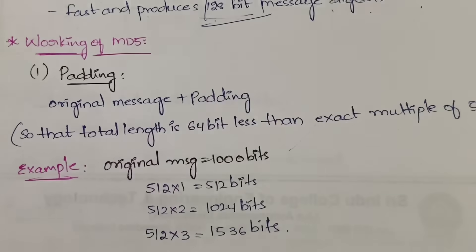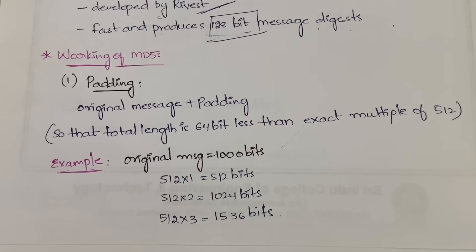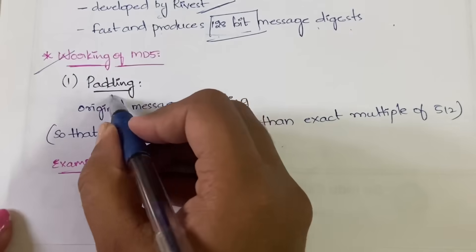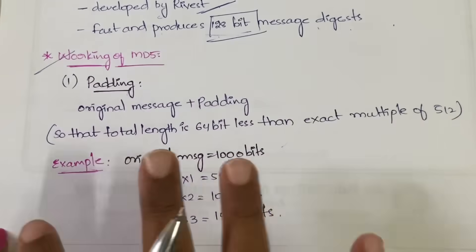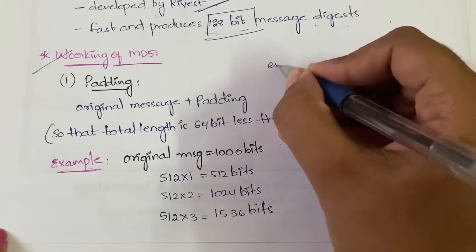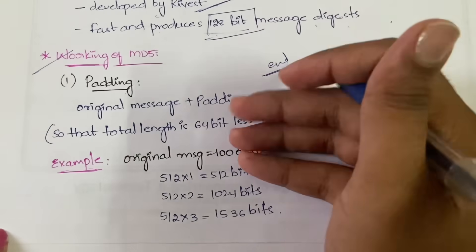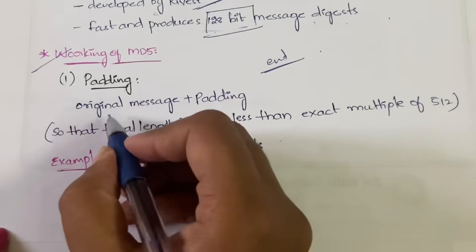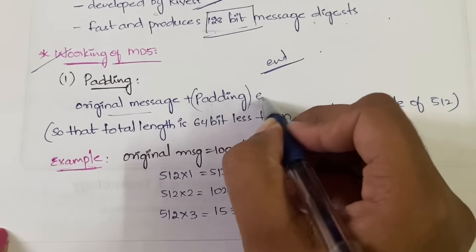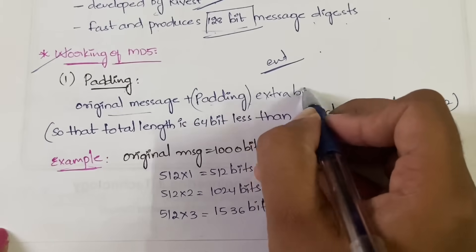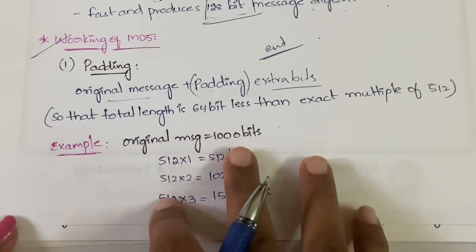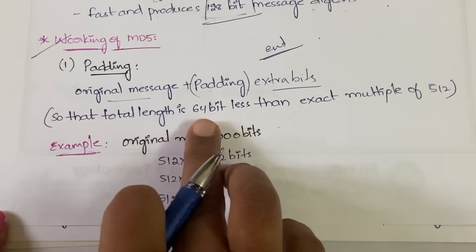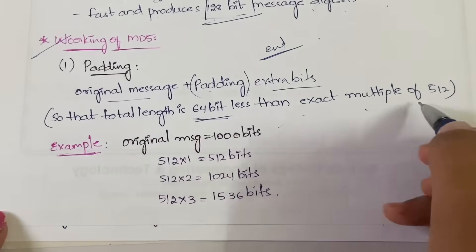In the working of MD5 we have around five to six steps. The first step is padding. Padding means you will be adding some extra bits at the end of the original message, so that the total length becomes 64 bits less than an exact multiple of 512.